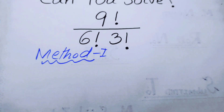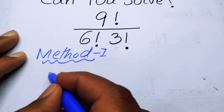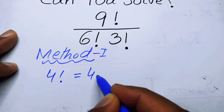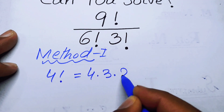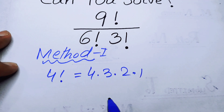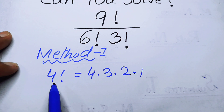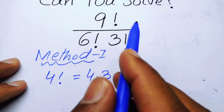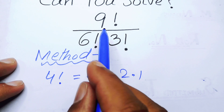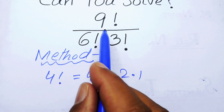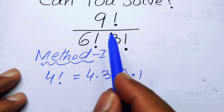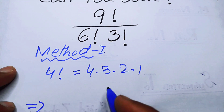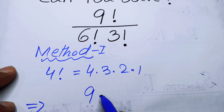You know about the factorial sign — for example, four factorial equals four times three times two times one, meaning you multiply all numbers less than or equal to four. So now in Method 1, we can write nine factorial by opening it up to the six factorial.